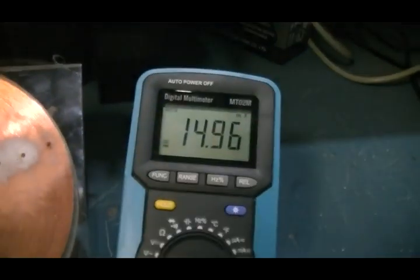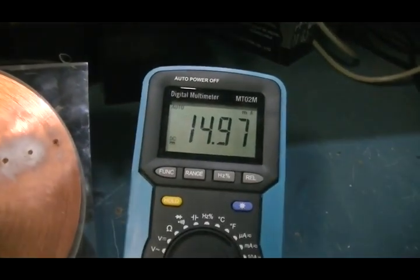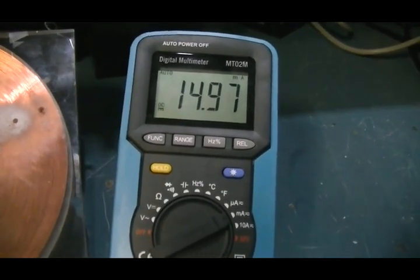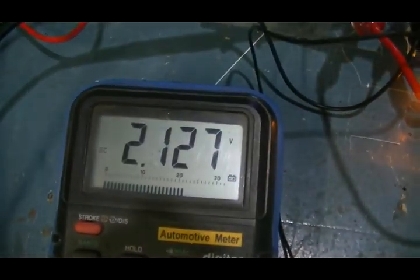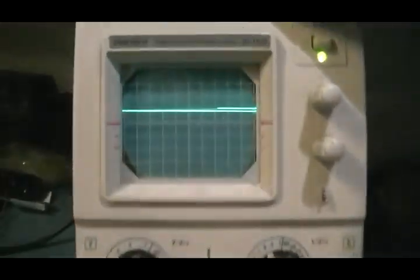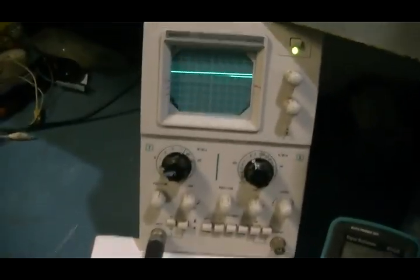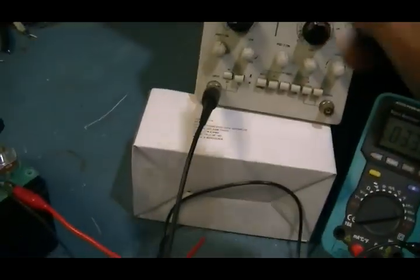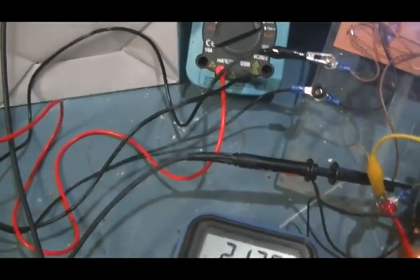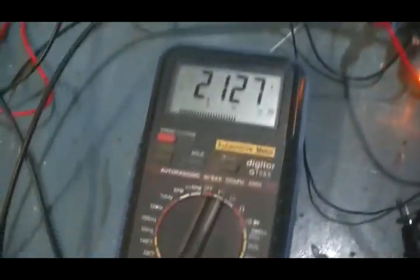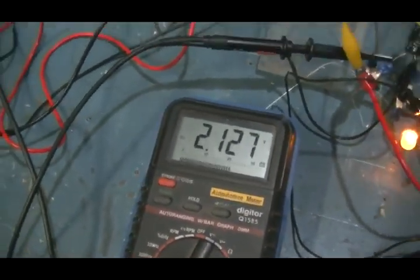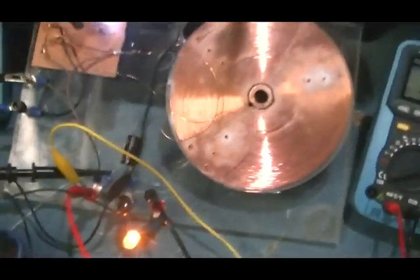So there you have it. I'm only measuring the output across that LED, which is 14.9796 milliamps at 2.127 volts, confirmed by the scope. The input is, of course, our 3.39 milliamps, which I've also confirmed using Ohm's law, the resistor and the scope at the 4.61 volts we showed on this meter before I disconnected it.